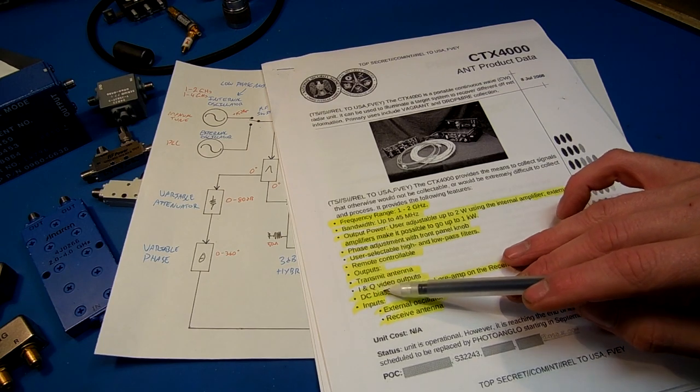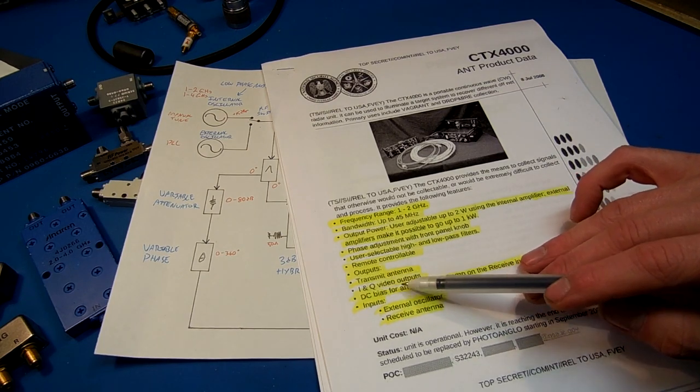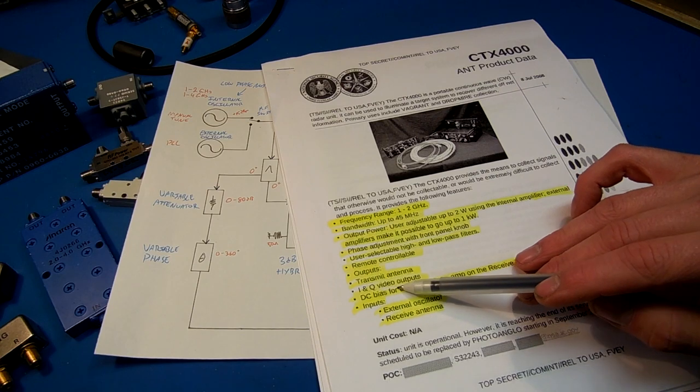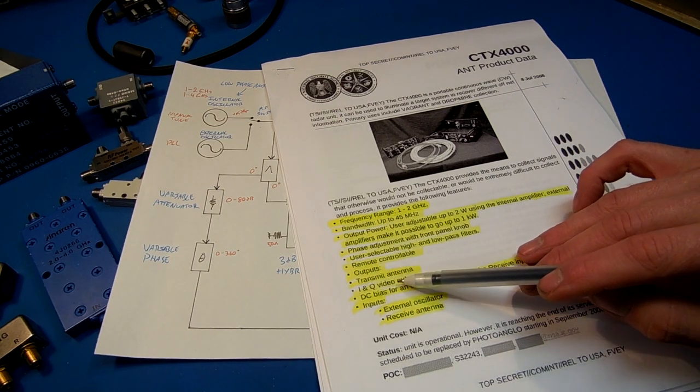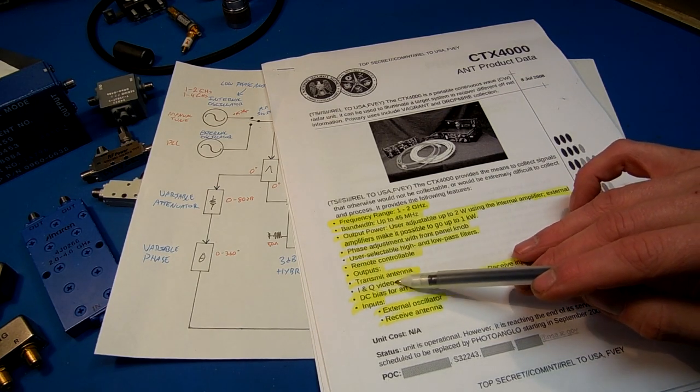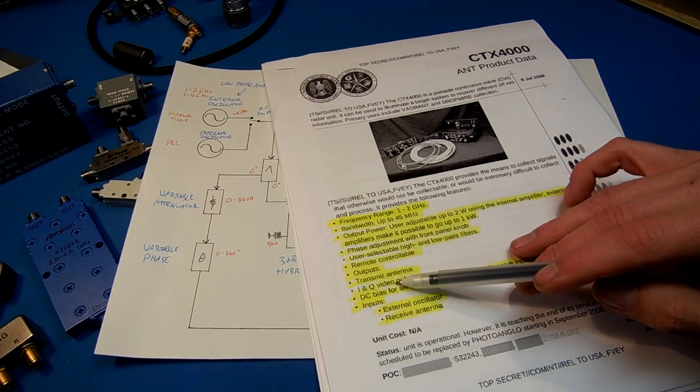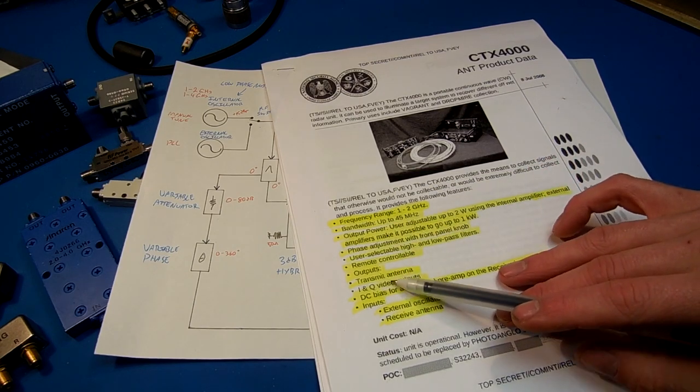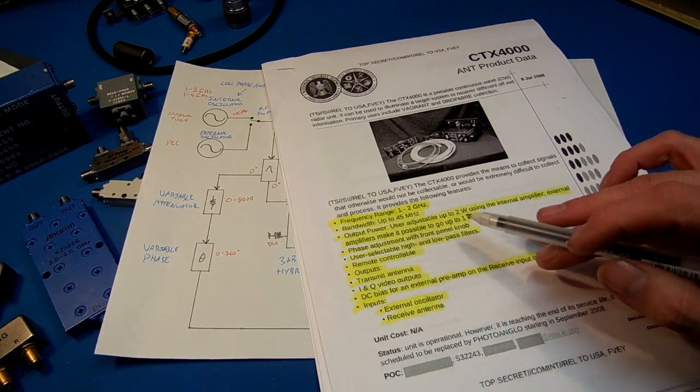And then INQ video outputs. This is the in phase and quadrature phase output from the mixers. It's referred to as a video output. That's mostly a historical term. It's not a real video like you're thinking normally, like you took up to a VCR.